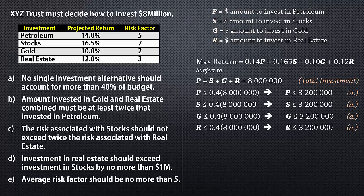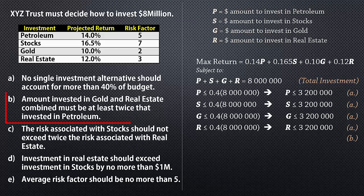Note that I did not just write one line for these 4 constraints, as depicted here. You might understand what it means, but most software for solving LPs usually don't. And because these are 4 distinct constraints, we usually state them individually. For B, the amount invested in gold and real estate combined must be at least twice that invested in petroleum. And we write G plus R greater than or equal to 2P, with G plus R representing gold and real estate combined, greater than or equal to representing 'at least', and 2P representing twice the amount in petroleum.